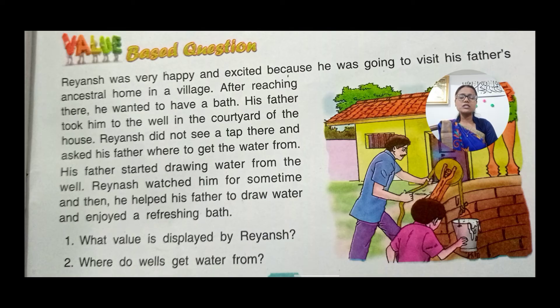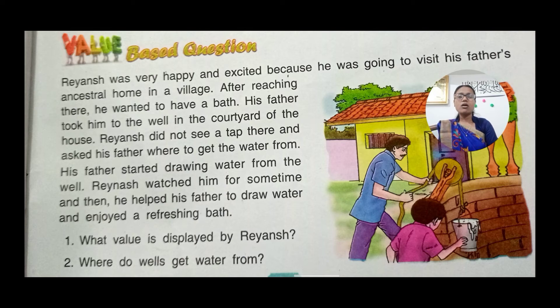What value is displayed by Riyanj? Which value is displayed here? First, he helps his father. And the other is that he adjusts to the situation — he doesn't complain.